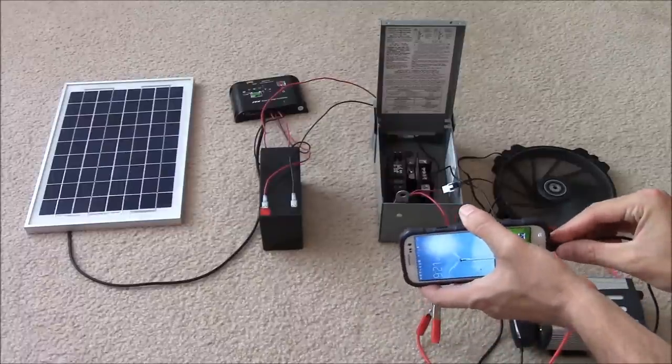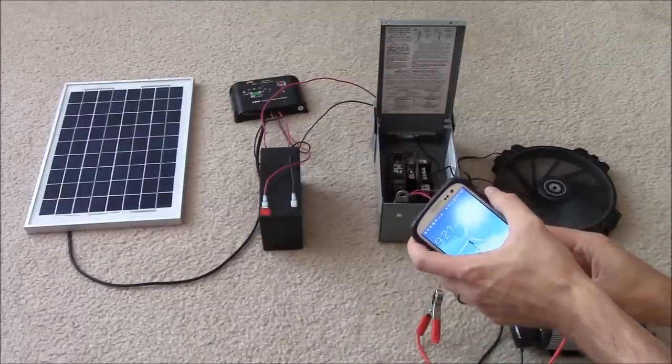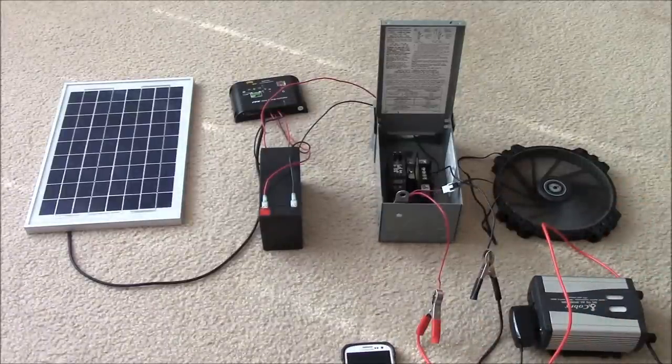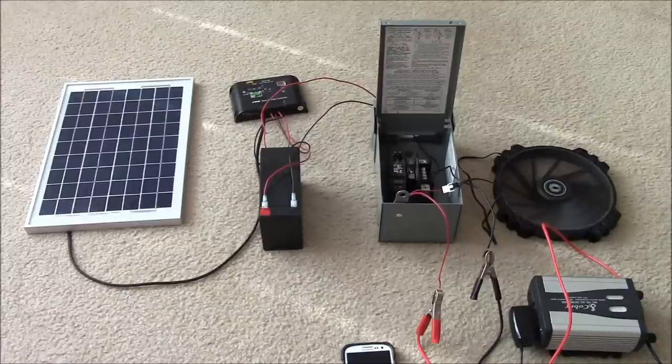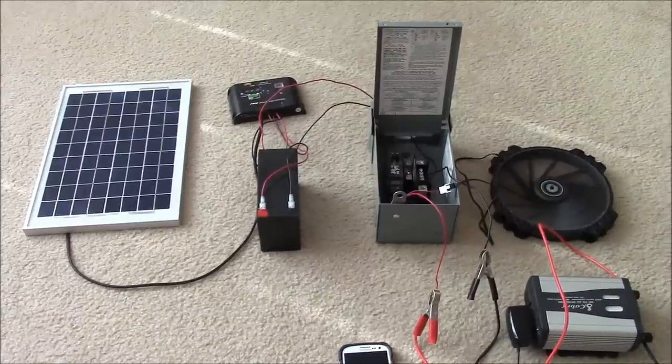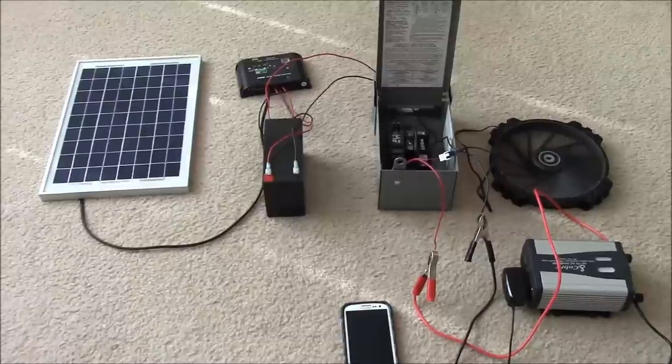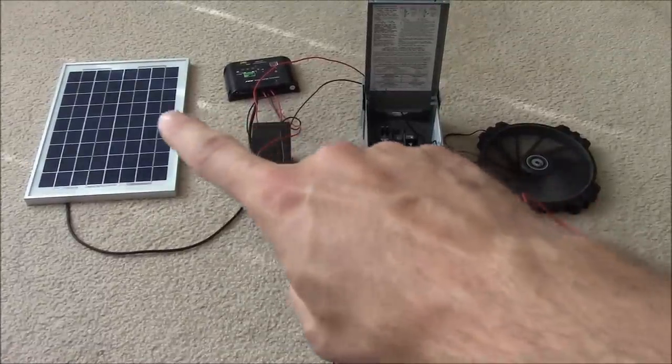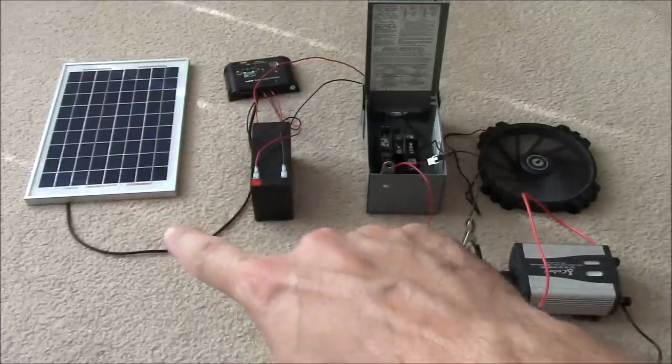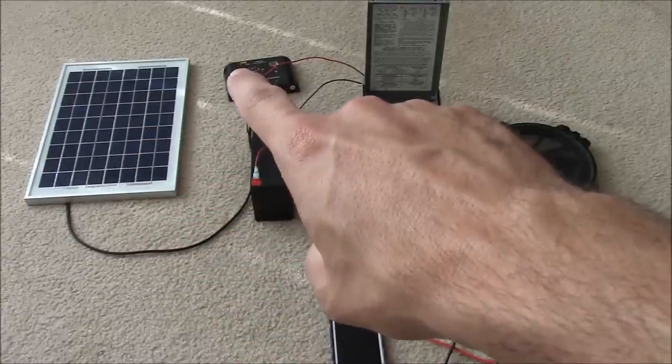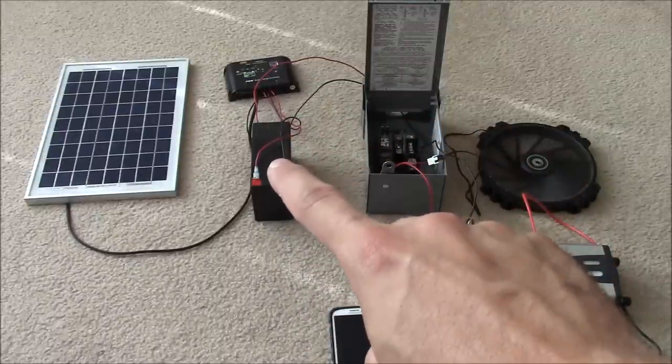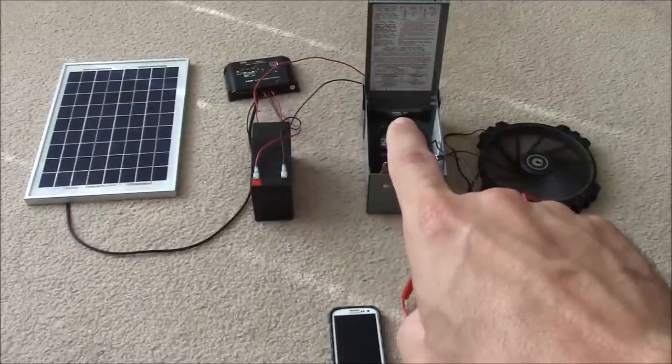And we're powering a cell phone and we're powering the fan. So let's see if we can see this a little bit better. Once again, we have a power source. Solar panel comes into the charge controller. The charge controller manages the power and either sends it to the battery to charge the battery, or sends it on to the load.